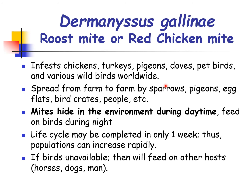The common name of Dermanyssus gallinae is the roost mite, or the red chicken mite. This particular Mesostigmata mite infests chickens, turkeys, pigeons, doves, pet birds, and various wild birds worldwide. It is spread from farm to farm by sparrows, pigeons, egg flats, bird crates, people, and others.